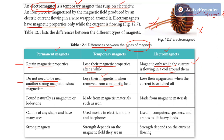The third difference is: permanent magnets are found naturally as magnetite or lodestone. Temporary magnets are made from magnetic material such as iron. Electromagnets are also made from magnetic material. So both temporary magnets and electromagnets are made from magnetic material, while permanent magnets are found naturally as magnetite or lodestone.